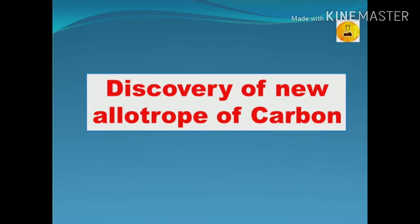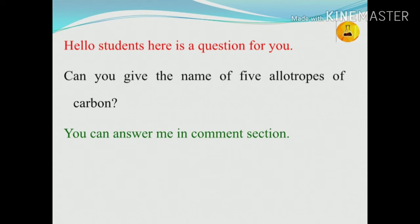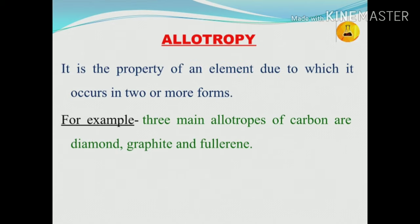Discovery of a new allotrope of carbon. Hello students, here is a question for you: can you give the name of five allotropes of carbon? You can answer me in the comment section. Allotropy is the property of an element due to which it occurs in two or more forms.